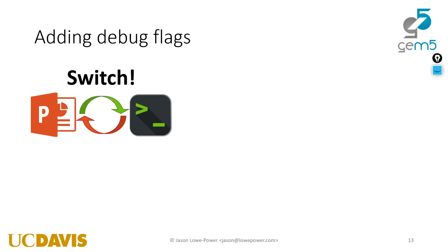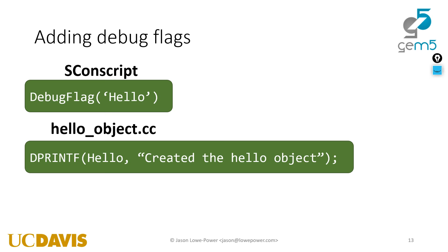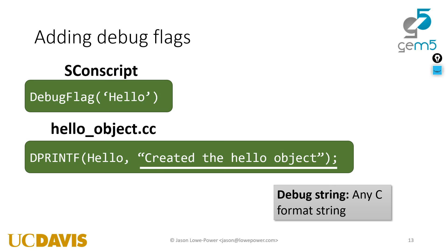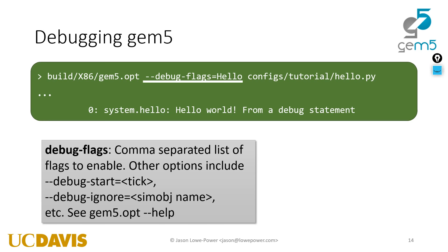So to summarize: we have to declare the flag, then we can use it. dprintf is the macro you'll use most when debugging, but there are other debug macros as well covered fully in the book. dprintf is the only one you need in about 90% of cases. You can pass any format string — percent d works just like with normal printf. Note that the debug flag option is an option to GEM5, not to your Python script.